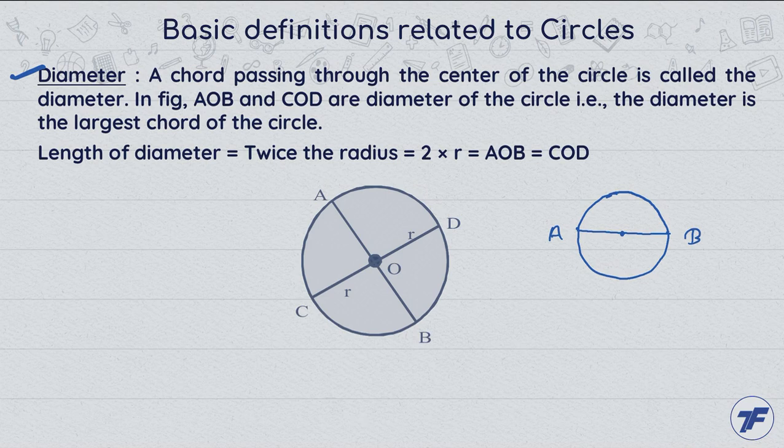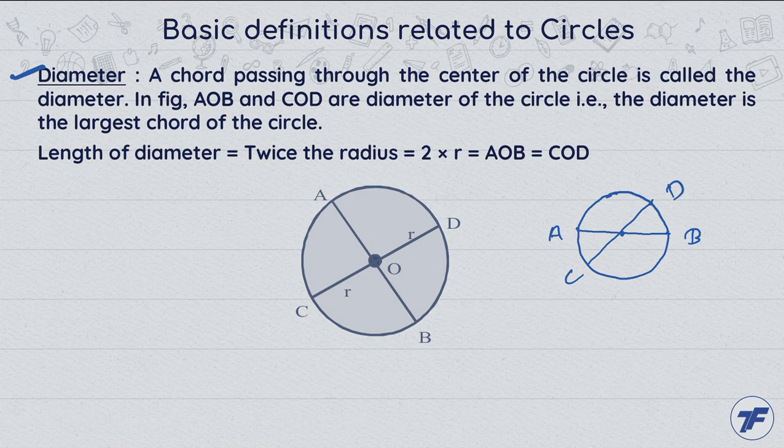क्या बोल देंगे diameter जो हमारी fixed point यानि center से पास हो. जैसे कि AOB भी हमारे पास यहां क्या है diameter. कोई another chord है हमारे पास CD वो भी center से पास करती है. यह भी क्या हो जाएगी हमारी diameter हो जाएगी. Now